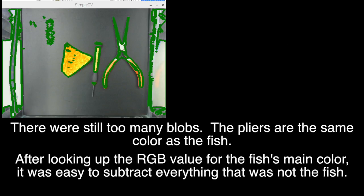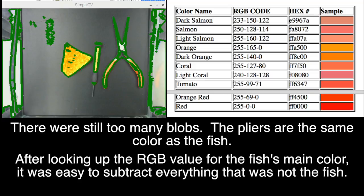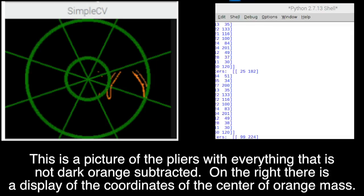The pliers are the same color as the fish. After looking up the RGB value for the fish's main color, it was easy to subtract everything that was not the fish. This is a picture of the pliers with everything that is not dark orange subtracted. On the right, there is a display of the coordinates of the center of the orange mass.